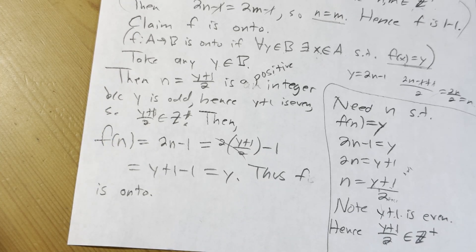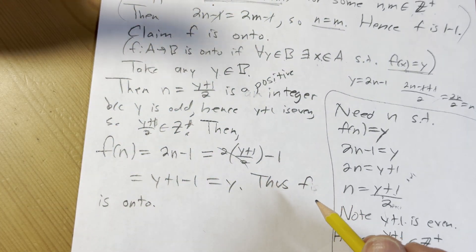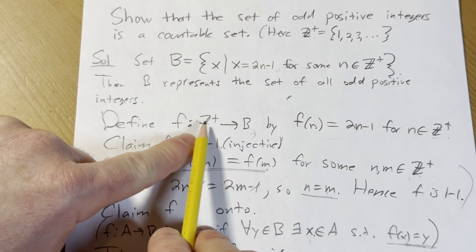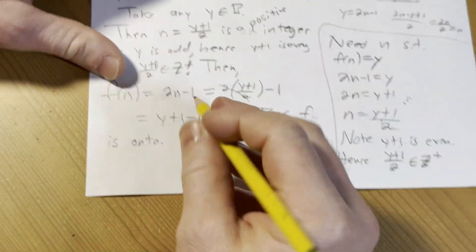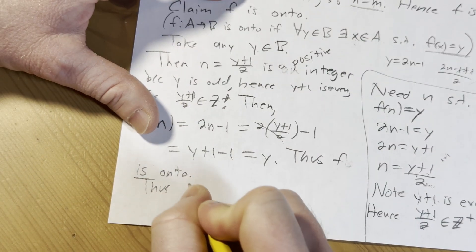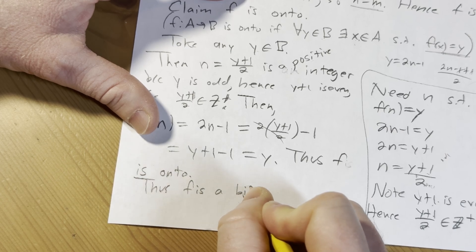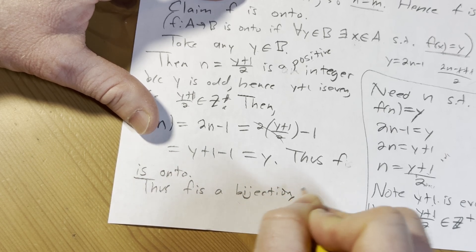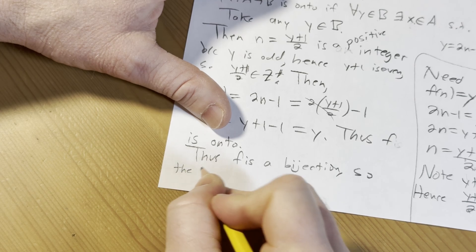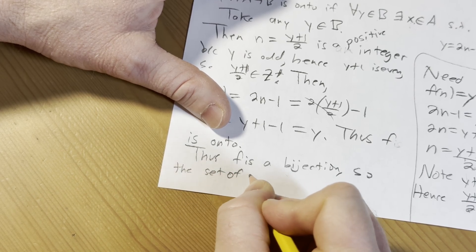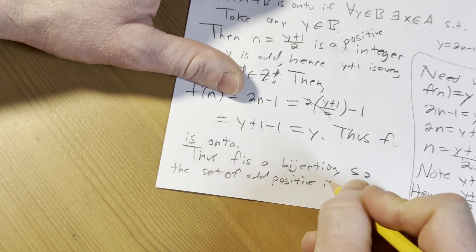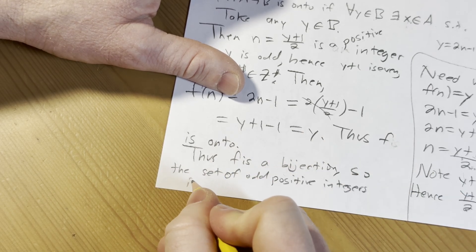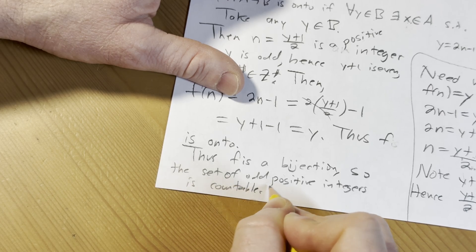So we've shown that it's onto, we've shown that it's one-to-one, therefore it's a one-to-one correspondence or a bijection. So therefore, these sets have the same cardinality, and since this is countable, so is B. So the set of odd positive integers is countable. And that completes the proof.